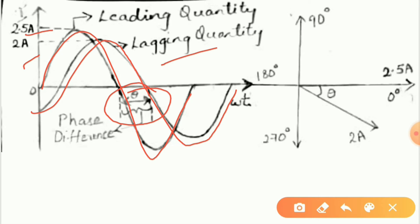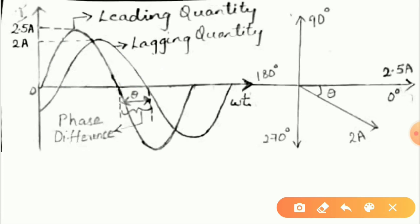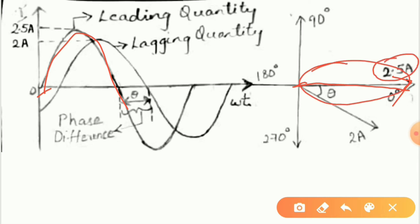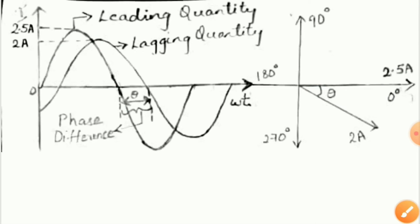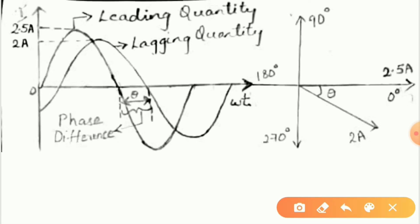If a phasor diagram is plotted for the given sinusoidal equation, for the leading quantity, zero acts as the reference line. The length of the line, 2.5A, represents the magnitude of that vector quantity, while the other quantity lags with an angle theta and has a vector length of 2A.